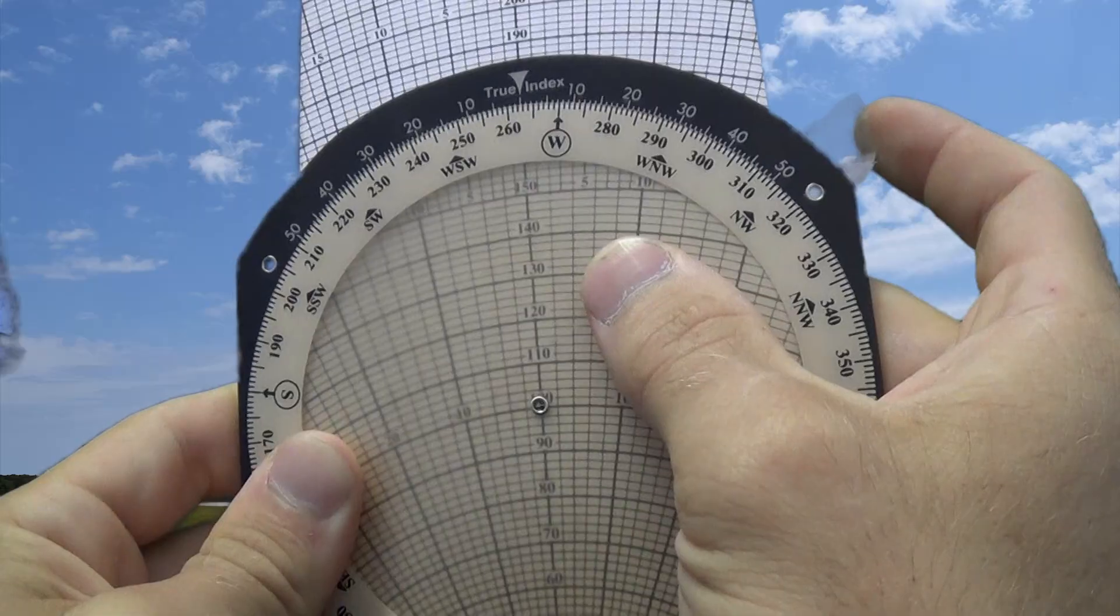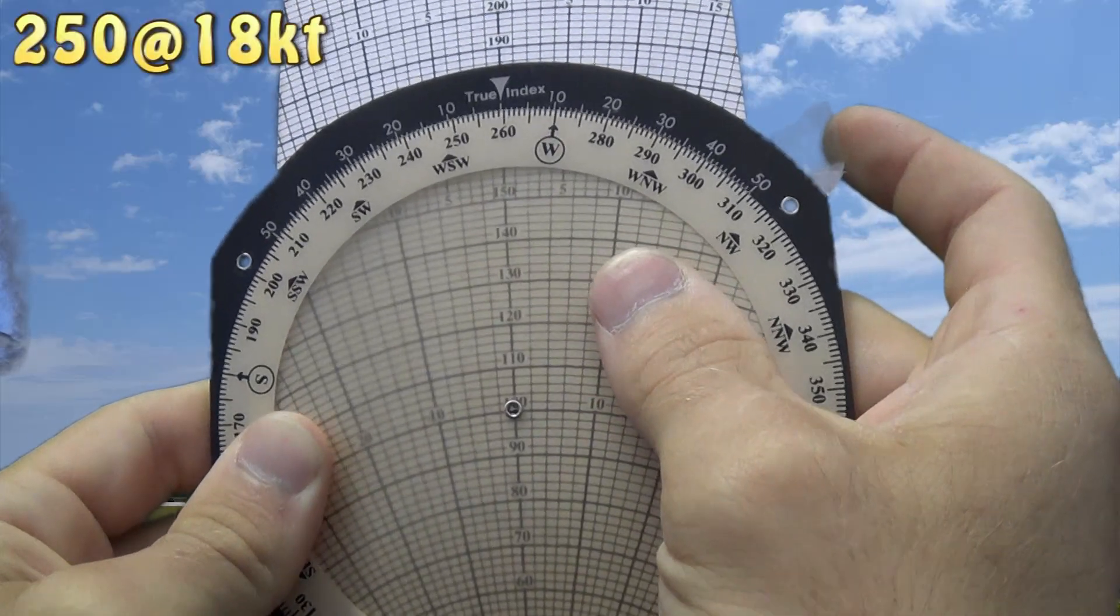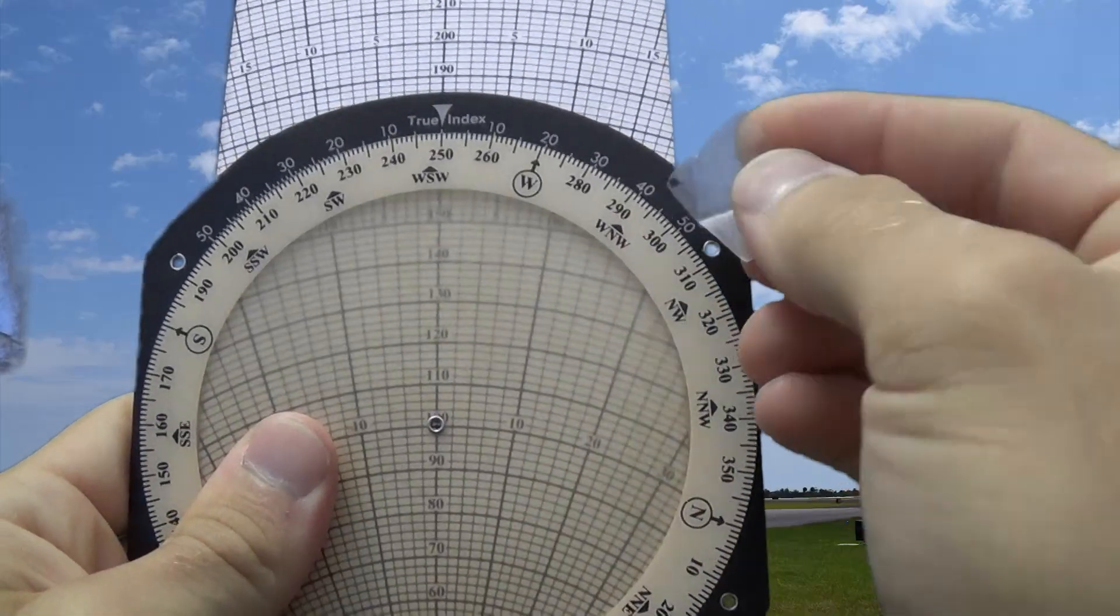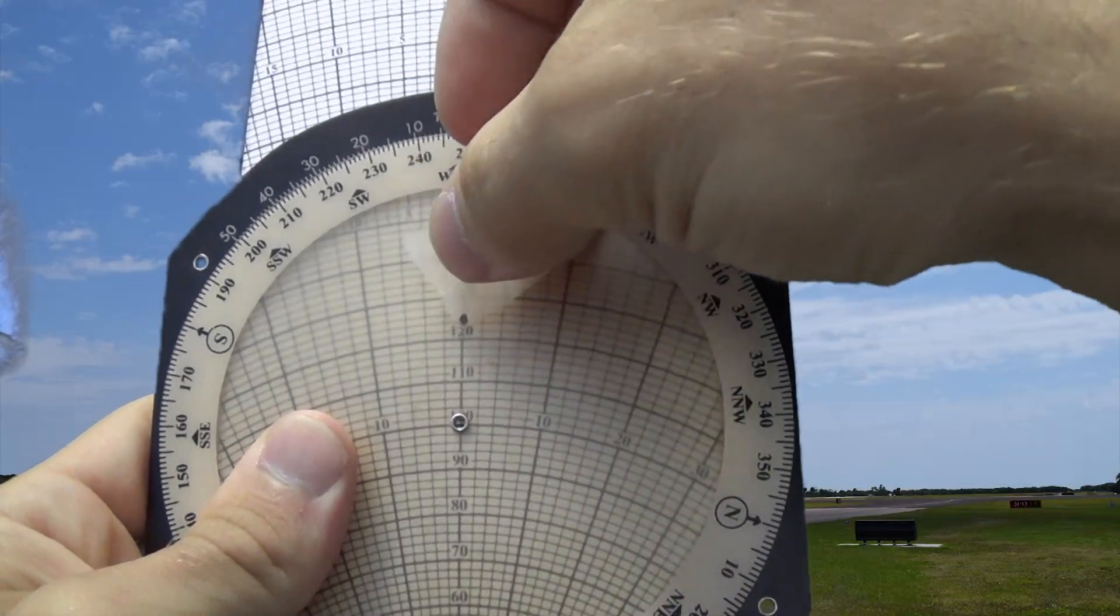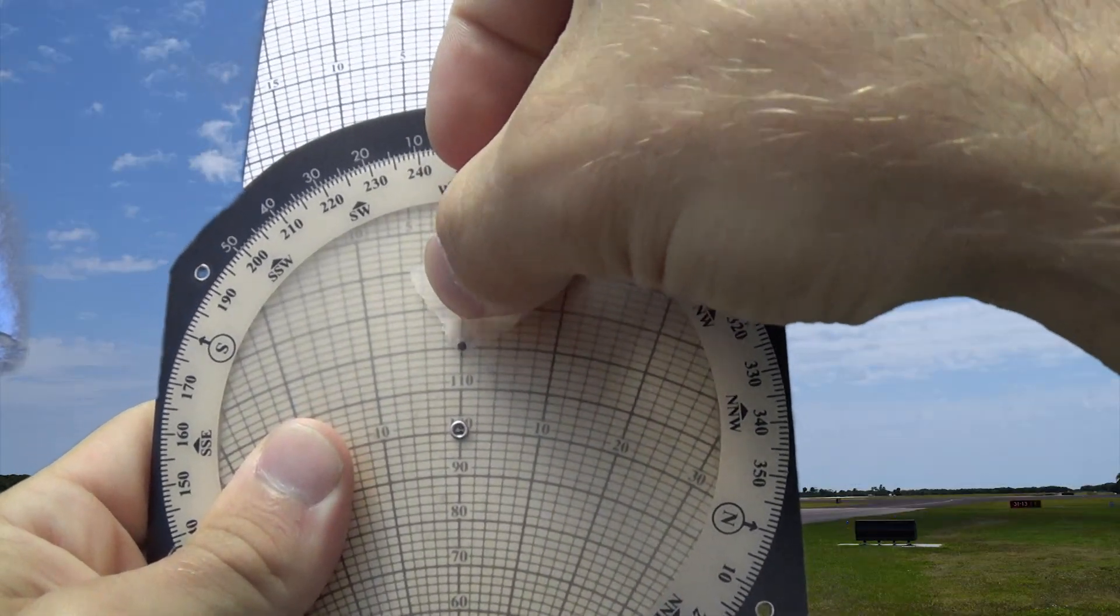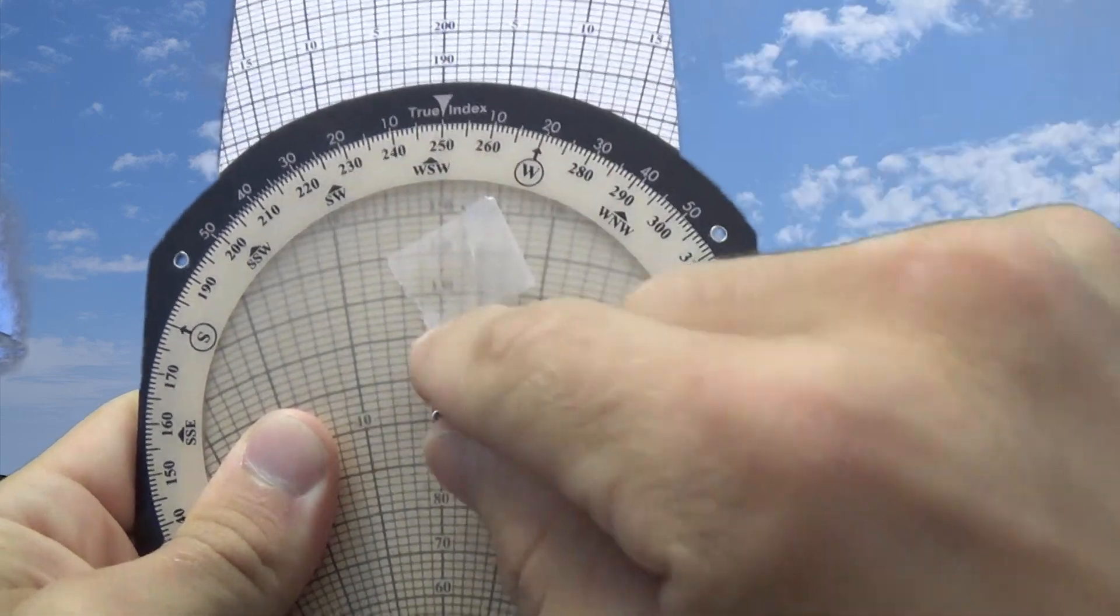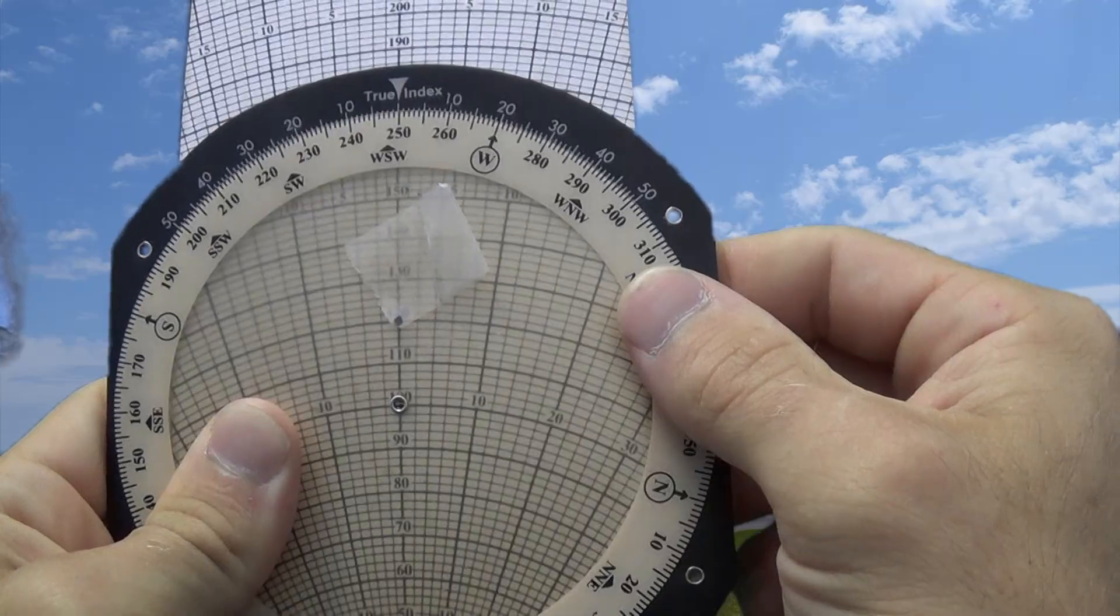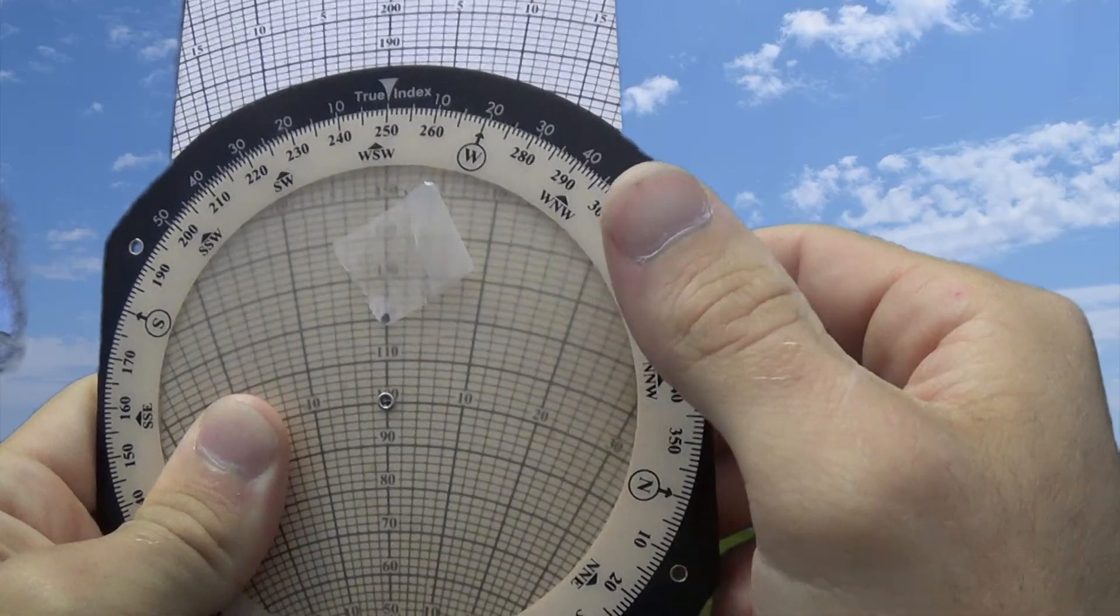So we're going to use 250 at 18 for our winds aloft so we're going to dial this to 250 and then put a little dot at 18 up from our starting point, 18 up from our grommet. I'm going to use a little piece of scotch tape there with a little dot on there. You could use a sticky note or a dry erase marker or anything you really want.